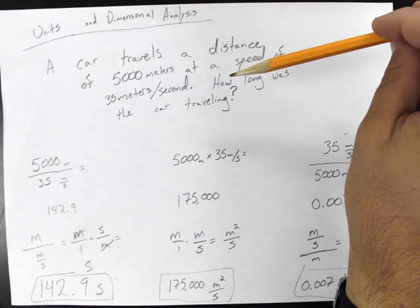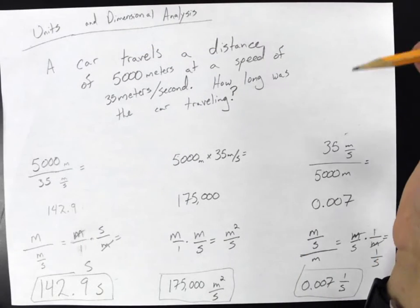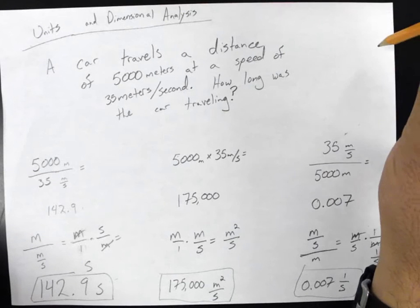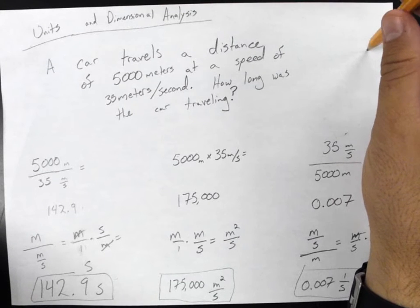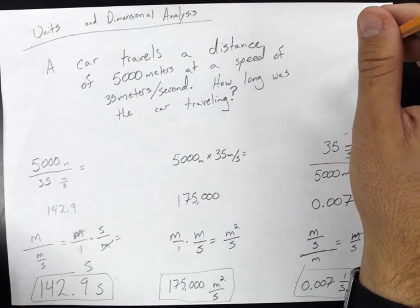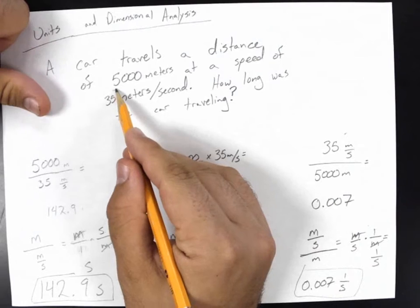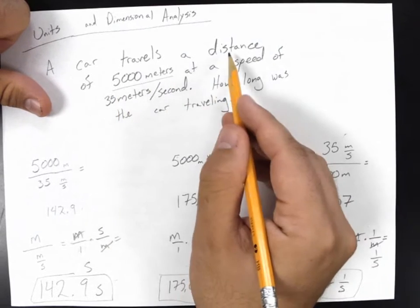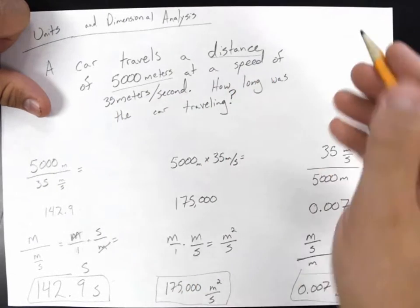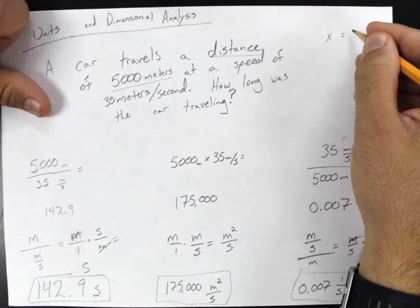So a car travels a distance of 5,000 meters at a speed of 35 meters per second. How long was the car traveling? So it looks as though we have a couple of things. We got 5,000 meters, travels a distance of 5,000 meters. So we've got a distance. We'll call that x of 5,000 meters.